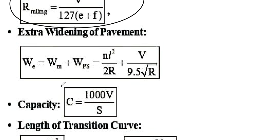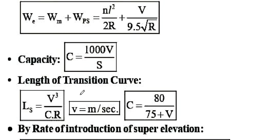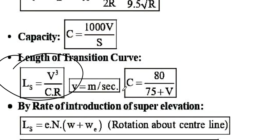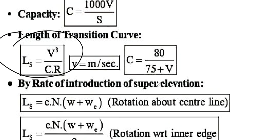For traffic capacity, the formula is C = 1000V/S, where V is speed and S is spacing. For transition curve length (Lund to Hood method), L = V³/CR, where V is in meters per second and the C value is 80/(75+V).